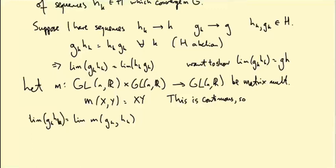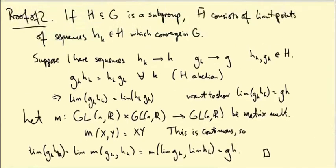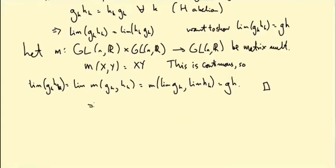So what we have is that the limit of m(gₖ, hₖ), that is another way of saying lim of gₖ times hₖ, equals m of the limit. Right, if you have a continuous function, you can bring the limit inside. Take the limit there and you get m of lim gₖ, lim hₖ, which is then g times h. So that actually suffices to prove that gh equals hg, so that shows that H bar is abelian.